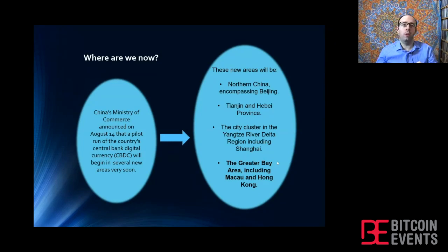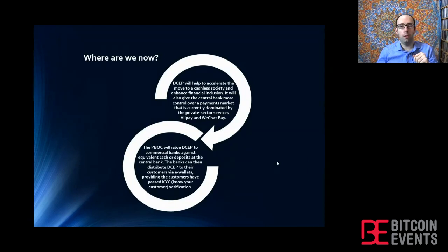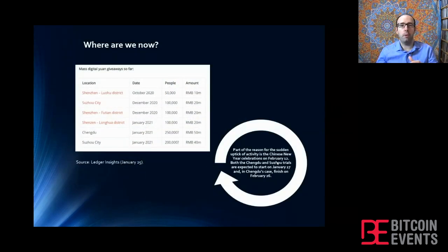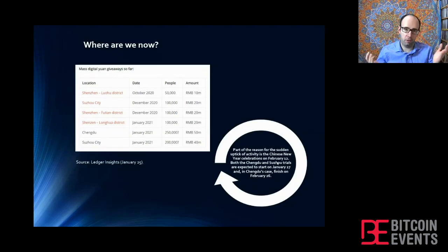Digital yuan has been tested so far only in mainland China, and it's been very successful. But the Chinese government is going to start testing digital yuan in China's two special administrative regions — Hong Kong and Macau. The tests in Hong Kong are going to be very important because they're going to allow China to test the digital yuan for cross-border payments for the first time. Hong Kong's currency is the Hong Kong dollar, not the RMB, which means testing there is different from testing in mainland China.